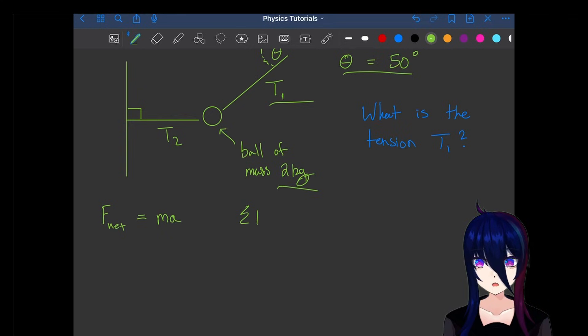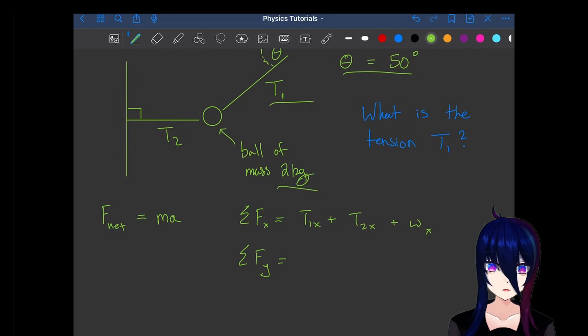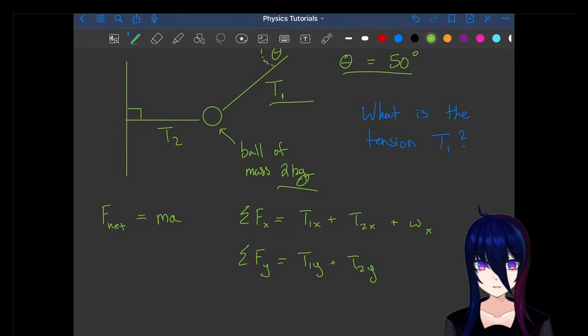So we know our F net is mass times acceleration, so the force of our X component is going to be T1X plus T2X plus weight of X. And the force of our Y component is going to be T1Y plus T2Y plus the Y component of our weight of the ball.